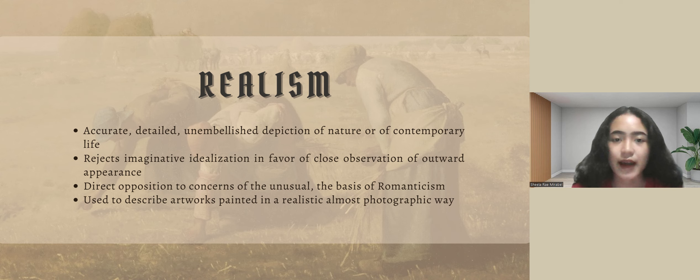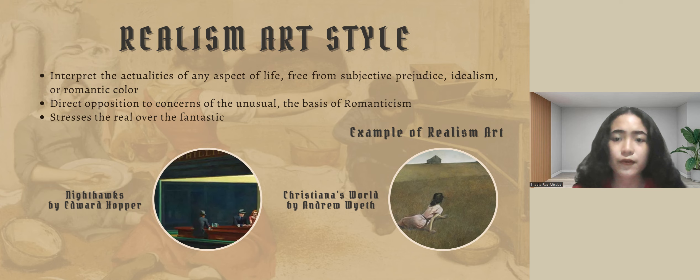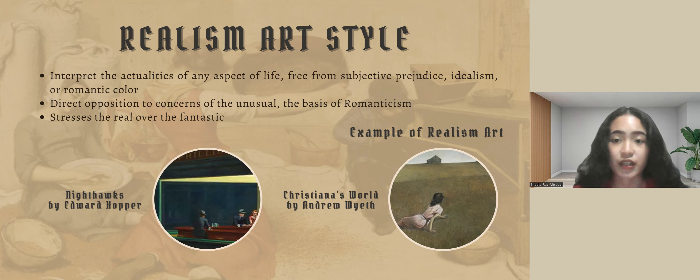Realism is the accurate, detailed, and unembellished depiction of nature or of contemporary life. It rejects creative idealization in favor of a thorough examination of visible appearance, and is diametrically opposed to Romantic concerns for the exceptional. The phrase is also used to describe paintings painted in a realistic, almost photographic style. Realism art's purpose is to interpret the actualities of any aspect of life, free from subjective prejudice, idealism, or romantic color — stressing the real over the fantastic. Examples of realism art include Nighthawks by Edward Hopper and Christina's World by Andrew Wyeth.